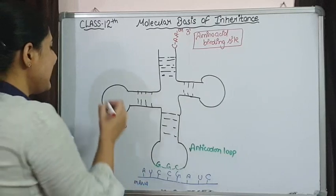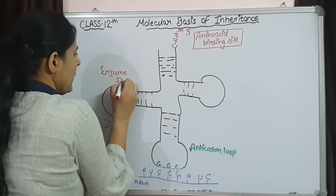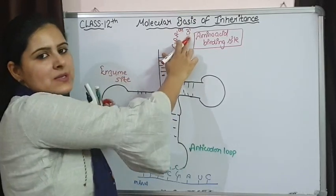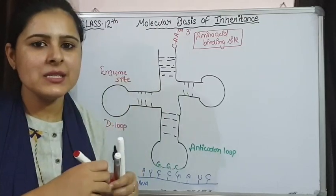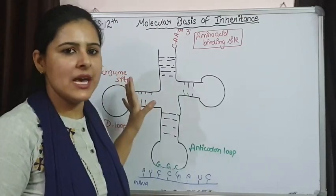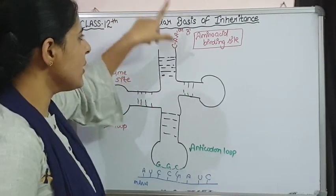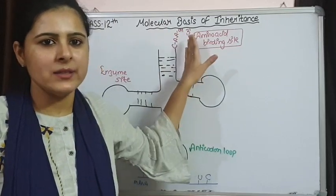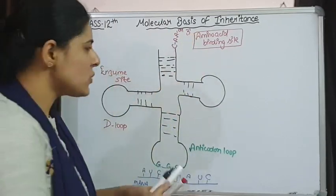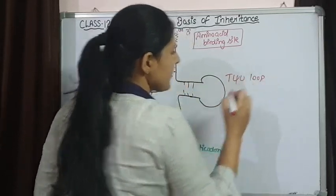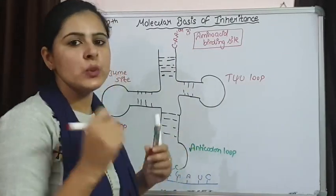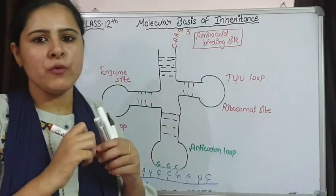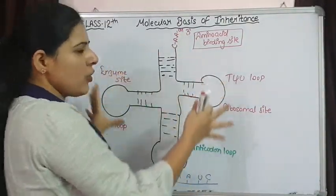This is known as the D loop — this D loop is known as the enzyme site. It is known as enzyme site because this loop is responsible to facilitate the binding of amino acid. An enzyme is going to interact here, and this enzyme is responsible for helping in the binding of this amino acid over the 3 prime end. This T-psi loop is responsible for the interaction with the ribosome — that is known as the ribosomal site.